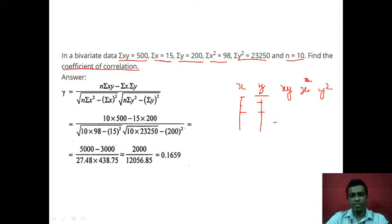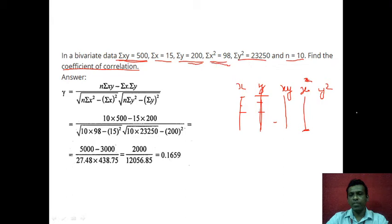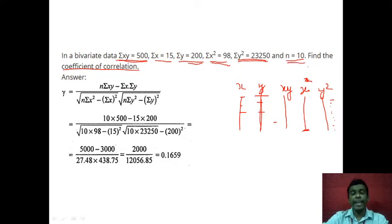The value of sigma x is 15. The value of sigma y is 200. The value of sigma xy is given as 500. The value of sigma x square, given at the bottom, is 98. The value of sigma y square is 23,250. And the total number of observations, that is n, is equal to 10. So all these values have been preliminarily calculated and given to you.